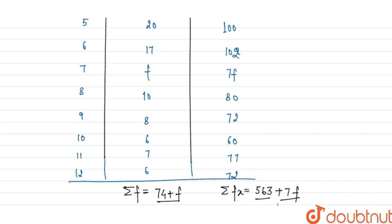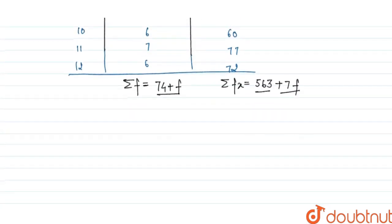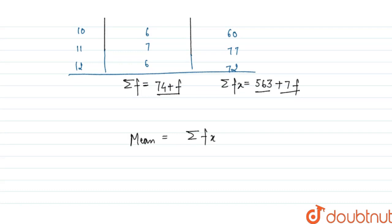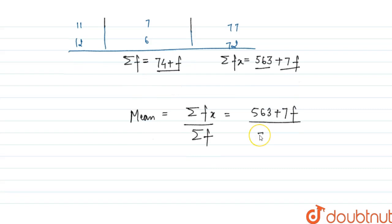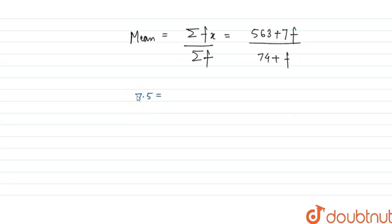There is a formula for mean: mean equals sigma fx over sigma f. Let's put all the values in. Sigma fx is 563 plus 7f, and sigma f is 74 plus f. The mean given in the question is 7.5, so we have: 563 plus 7f upon 74 plus f equals 7.5. Let's cross multiply: 7.5 times 74 plus 7.5f equals 563 plus 7f.